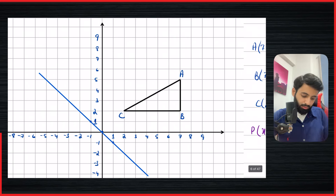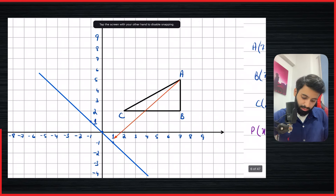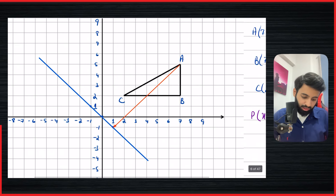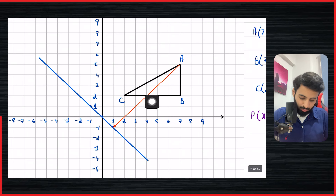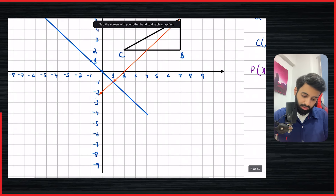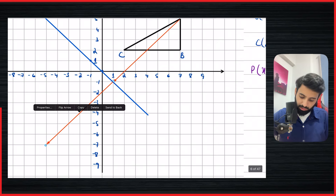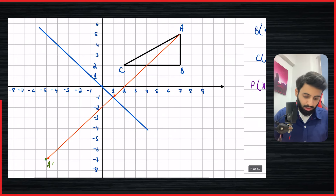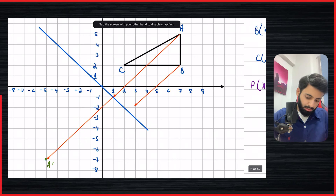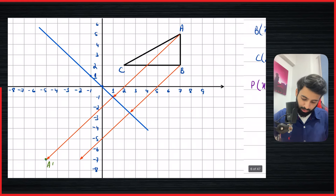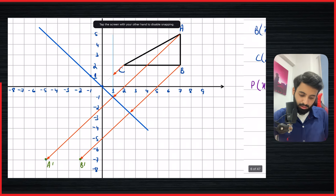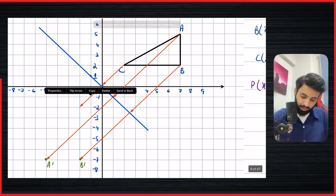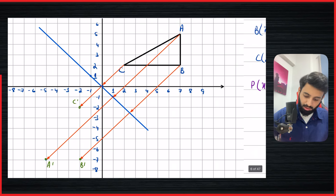This one is slightly more challenging — you have to get it exactly right. For point A, counting the diagonal distance gives six units, so we take it six units to the other side — there's A prime. For point B, the distance is four and a half units, so reflecting gives four and a half units to the other side — there's B prime. Point C is two units from the line, so reflecting takes it two units to the other side — there's C prime.